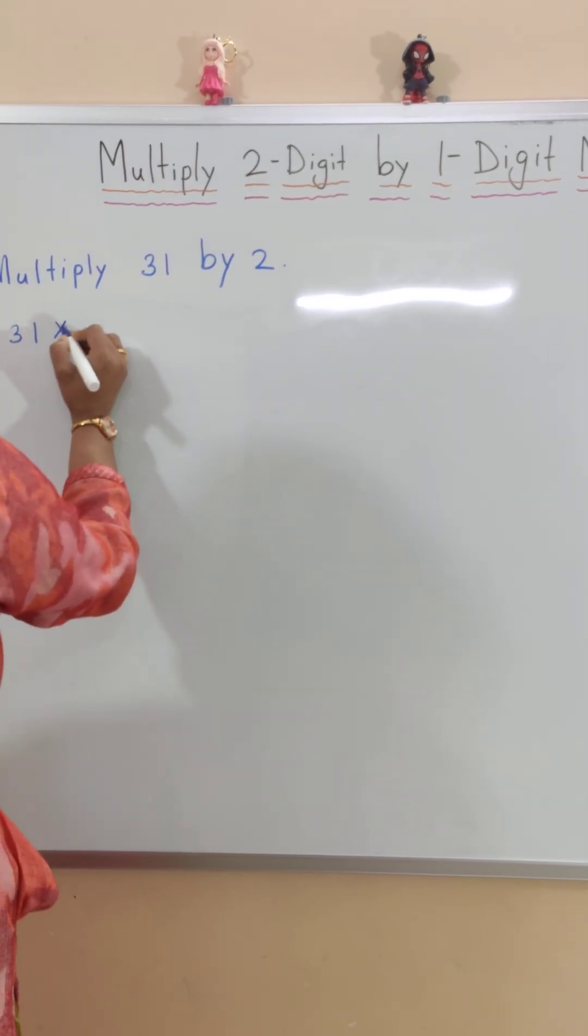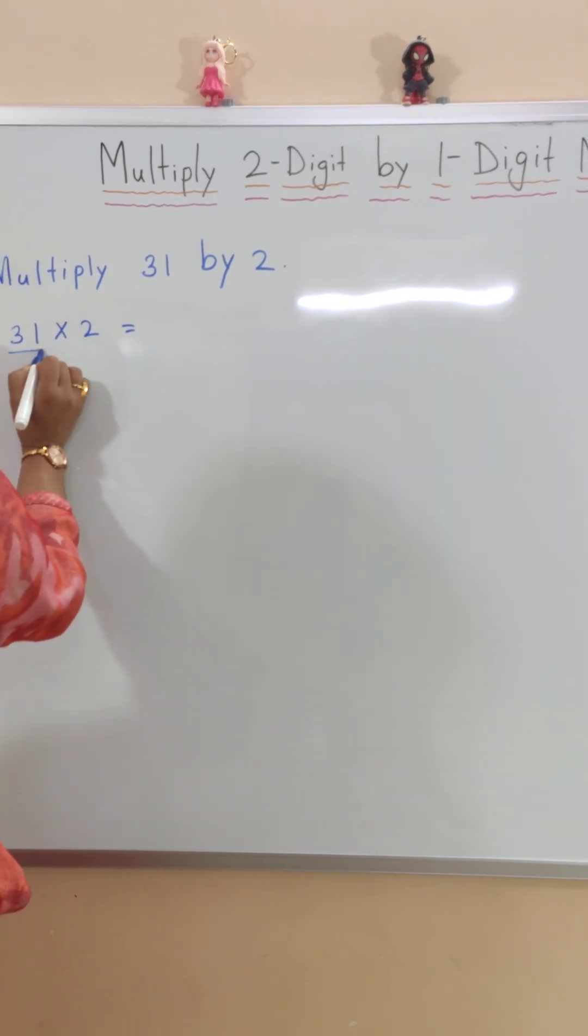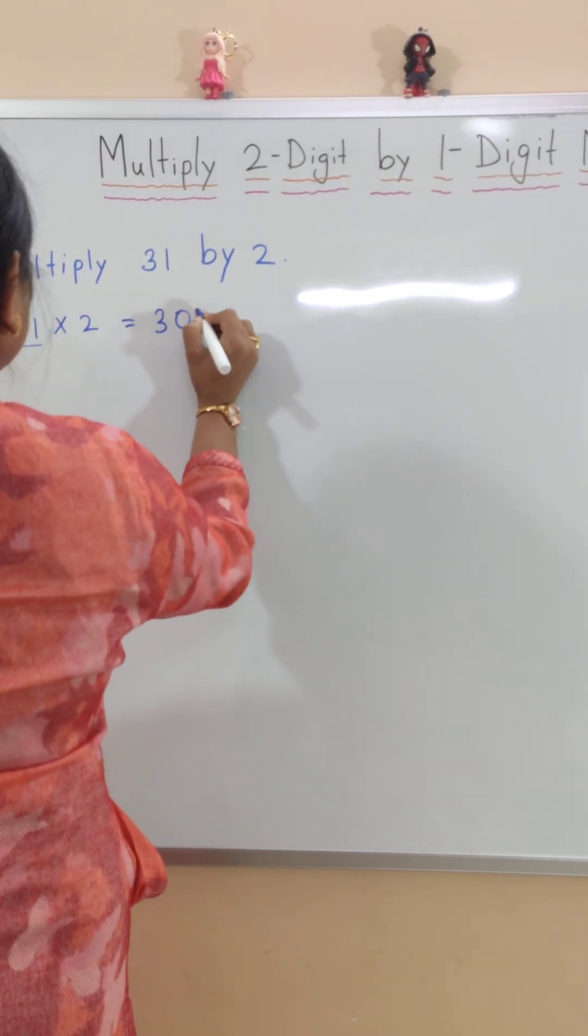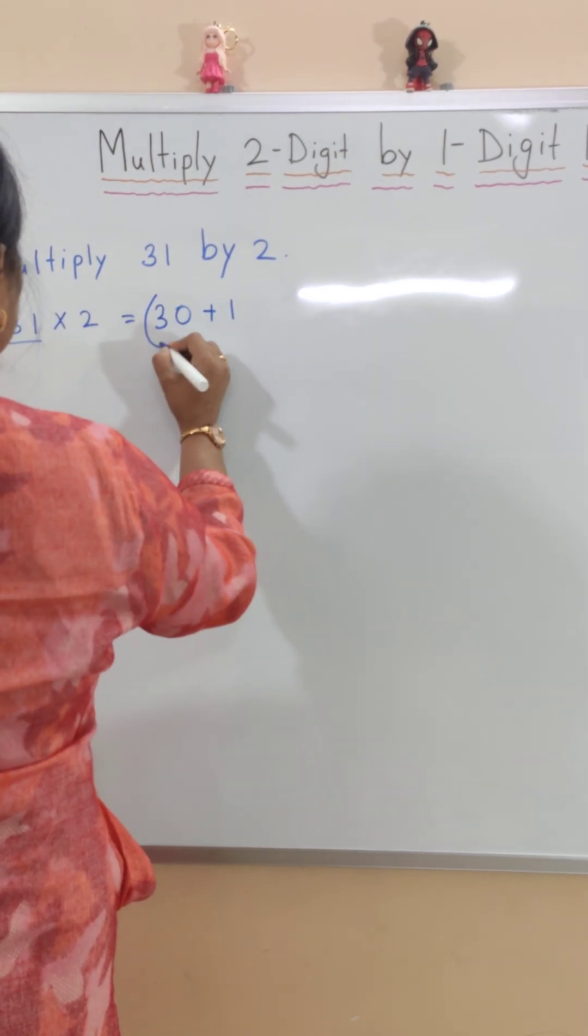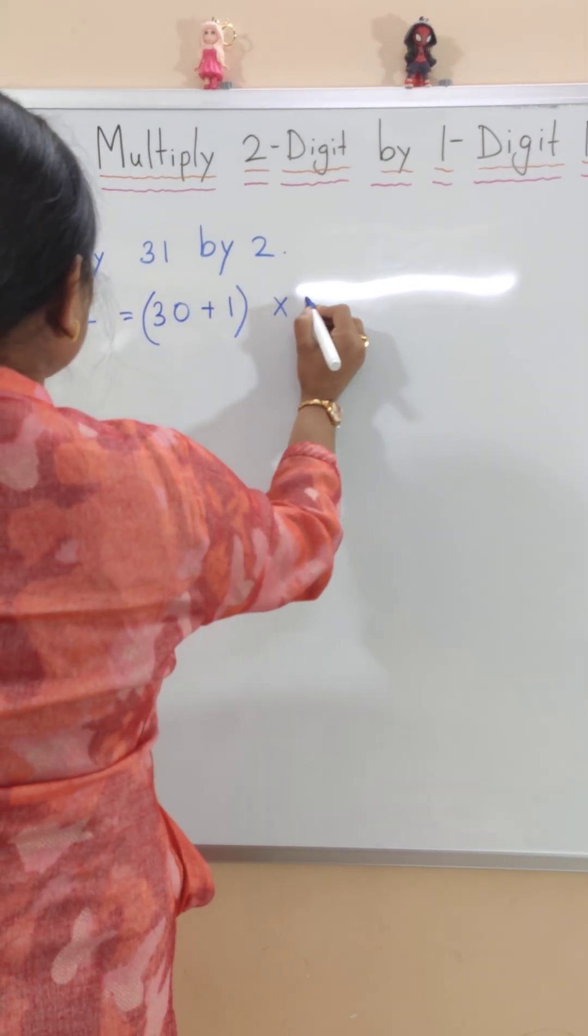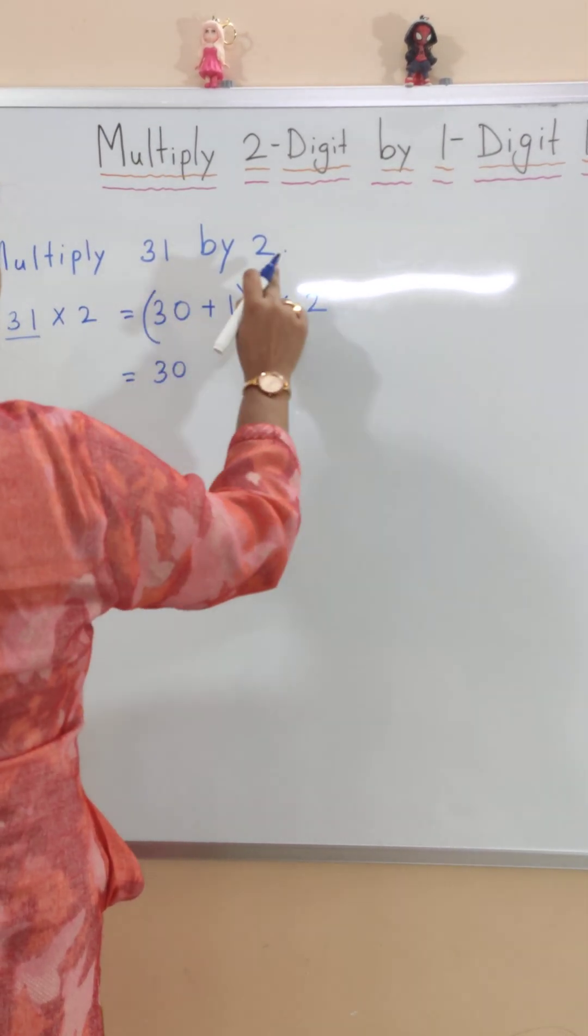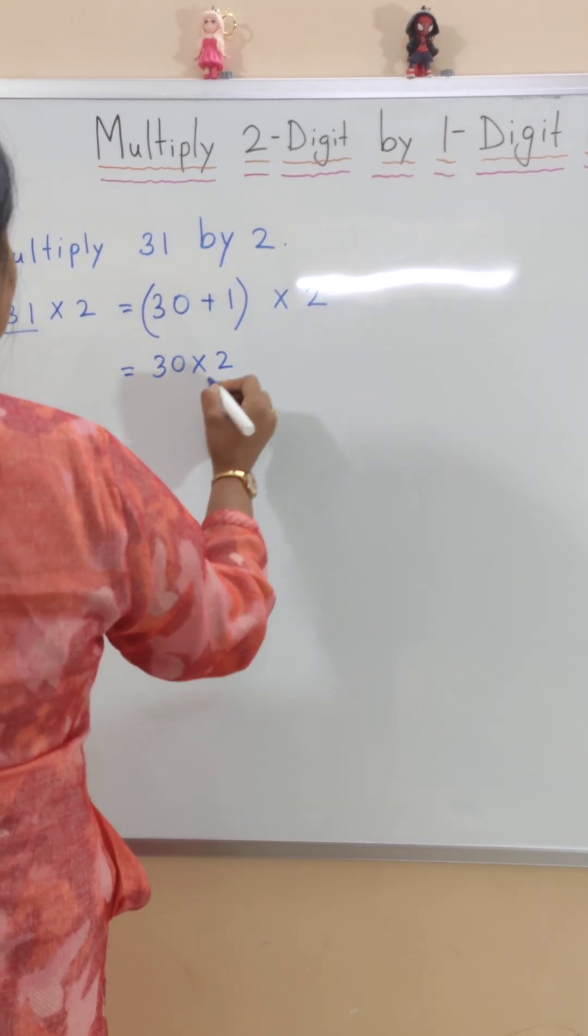31 times 2. So we will expand 31. 30 plus 1 equals 31 times 2. 30 times 2. We open the brackets.